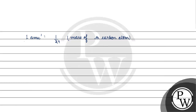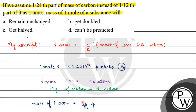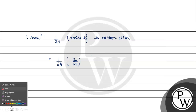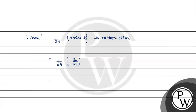If we talk about the mass of one carbon atom, it was equal to 12 by Na. Now with the new definition, 1 amu' is equal to one upon twenty-fourth times 12 by Na. When we solve this, it will come out to 1 upon 2Na.